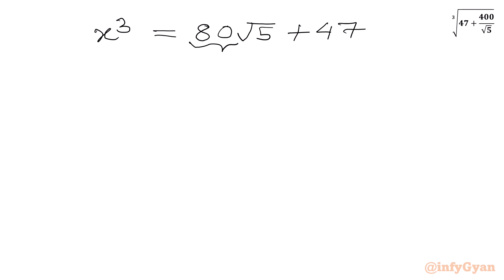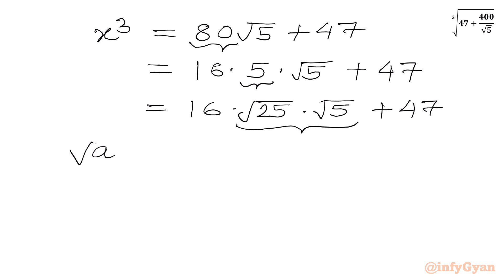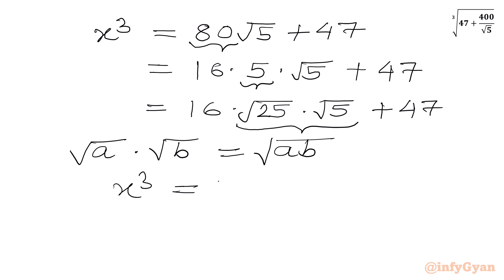I can write 80 as 16 times 5, then we have square root 5, then plus 47. Now we can club these two radicals. As we know, square root a times square root b equals square root of ab. So I can write x cubed equal to 16 times square root of 25 times 5, plus 47, which gives us 16 square root 125 plus 47.